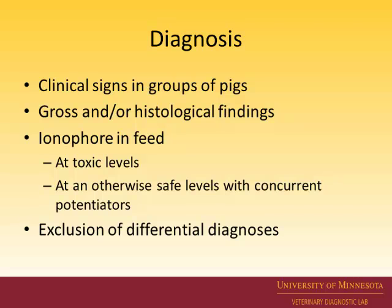The criteria that need to be fulfilled with ionophore toxicity would be appropriate clinical signs in groups of pigs. This isn't really an individual animal disease problem — it's feed related, so you should be seeing, as Dr. Robbins said, up to 20% affected, but in some areas potentially 8%. You'd want appropriate gross necropsy findings as well as histopathology, then demonstrate ionophores in the feed either at a toxic level or demonstrate the presence of ionophores with a potentiator. Tiamulin is known for that particular problem, and you need to exclude other differential diagnoses.